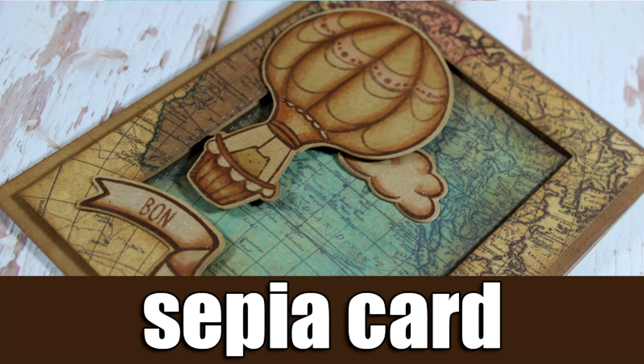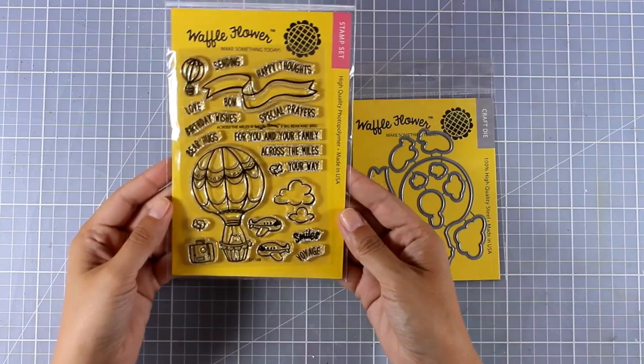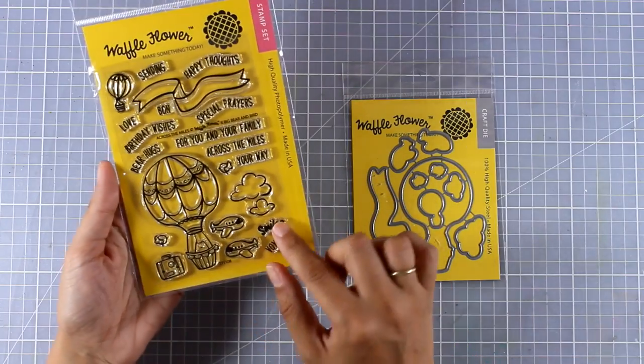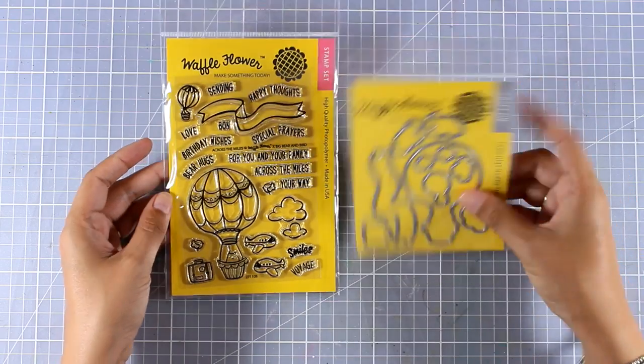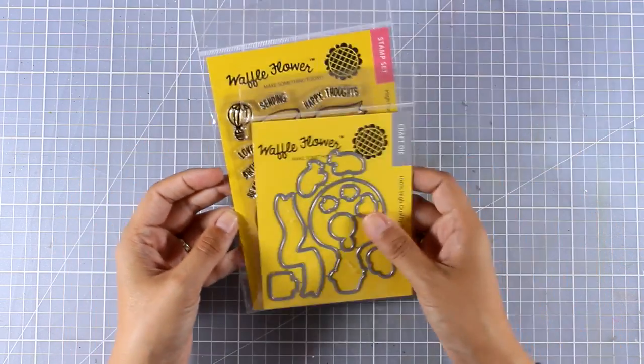Hi everyone, it's Vicky here and welcome back. Today I'm making a card and I'm going to show you how you can achieve the sepia look. First I'm going to show you the stamp set I'll be working with. This is Across the Miles by Waffle Flower and there are also matching dies available.